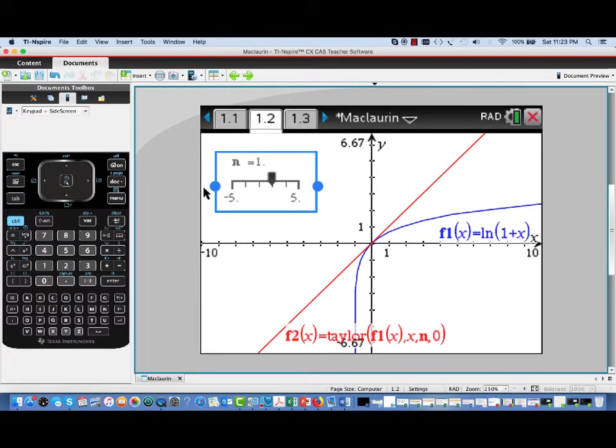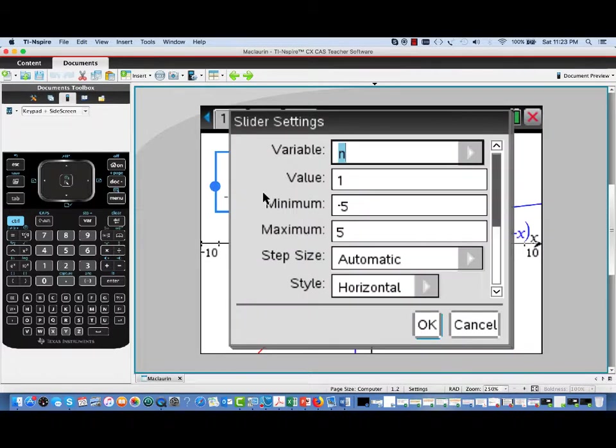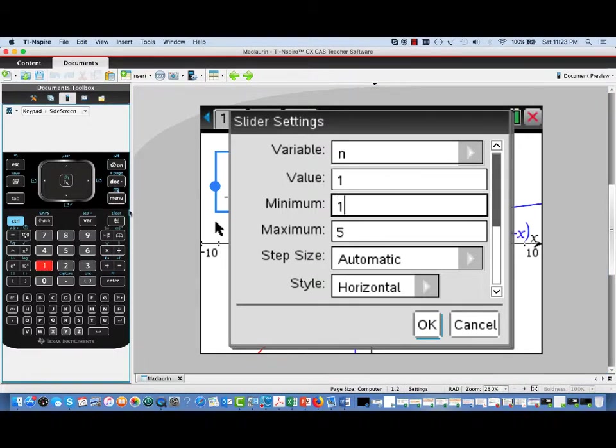And let's go ahead and change the settings for this slider to what we want. So I'll pull up the settings. And we'll start out with a minimum value of 1. And let's go through a healthy set of degrees. We'll go all the way from 1 to, say, 12. So we can look at a lot of different Maclaurin polynomials that way.